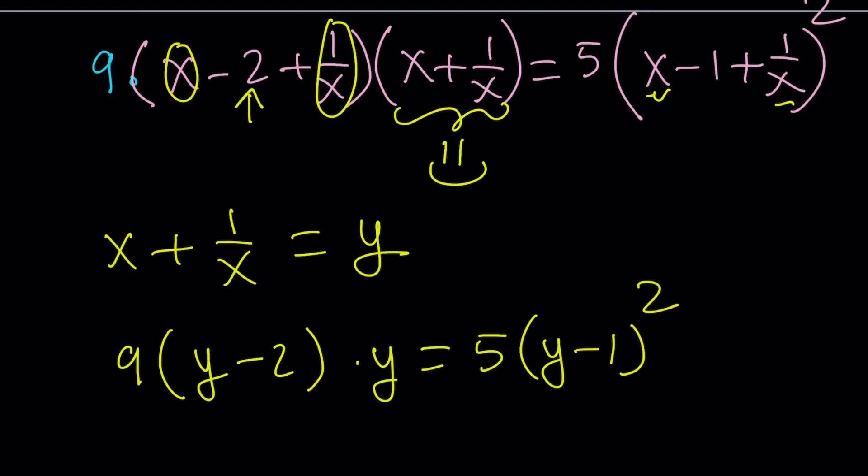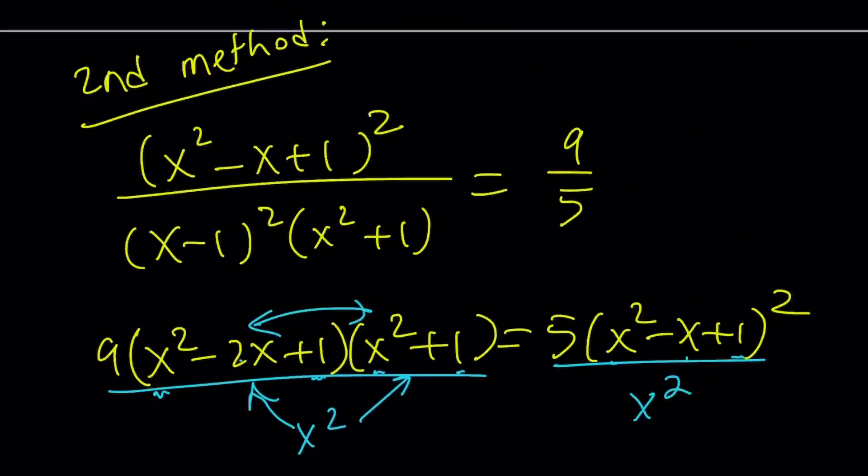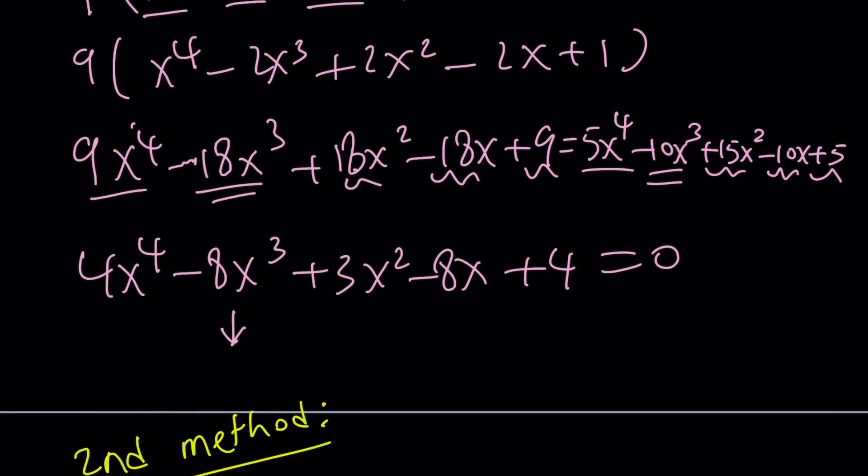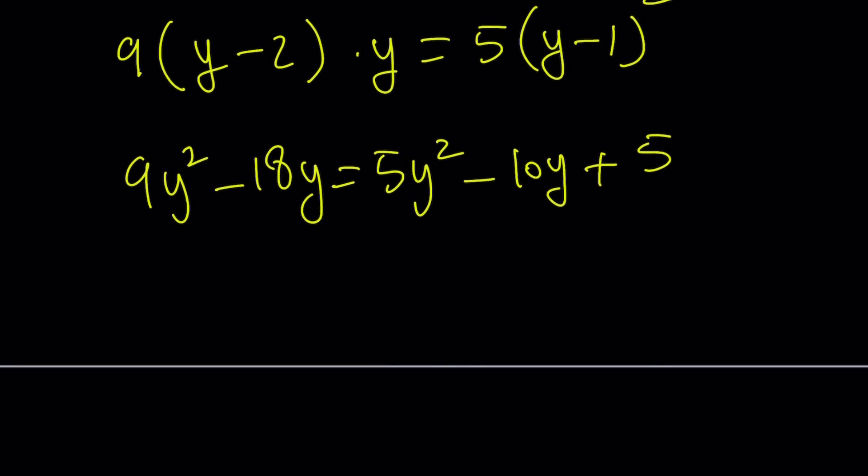Let's distribute: 9y squared minus 18y equals 5y squared minus 10y. Come on, you can do this, not too hard. You see, from a crazy quartic equation we ended up with a quadratic. But we had to change variables. So change of variables is a very powerful, efficient technique. If applicable, always use it.